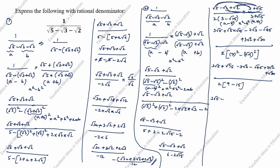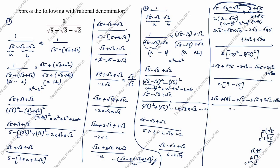Now we simplify: 3 root 5 plus root 75 — root 75 = 5 root 3, so we take 5 root 3. Minus 3 root 3. Minus root 45 — root 45 = 3 root 5, so minus 3 root 5. Plus 3 root 2. Plus root 30. Divided by minus 12.